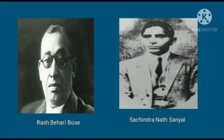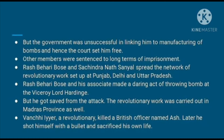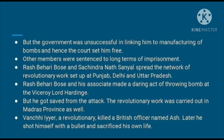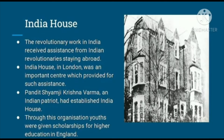Raj Bihari Bose and Sachindranath Sanyal spread the network of revolutionaries and set up operations in Punjab, Delhi, and Uttar Pradesh. Raj Bihari Bose and his associate made a daring act of throwing a bomb at Viceroy Lord Hardinge, but the Viceroy escaped safely. The revolutionary work was also carried out in Madras province. Vanchi Ayer, a revolutionary, killed a British officer named Ash, and later shot himself and sacrificed his own life. In this way, revolutionary work was taking place in many provinces.